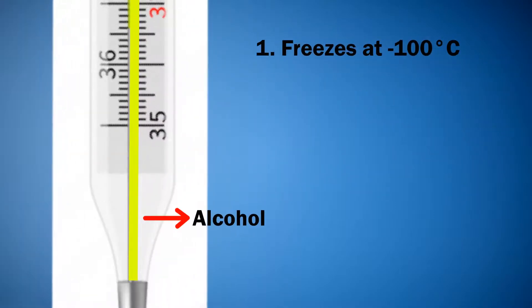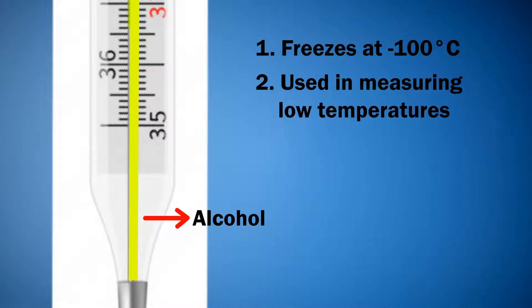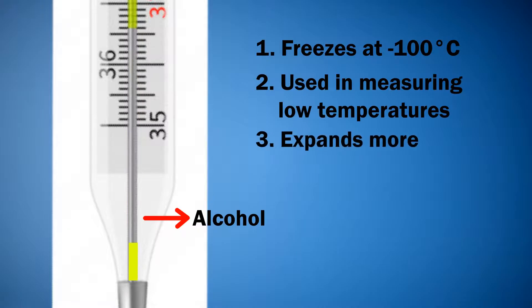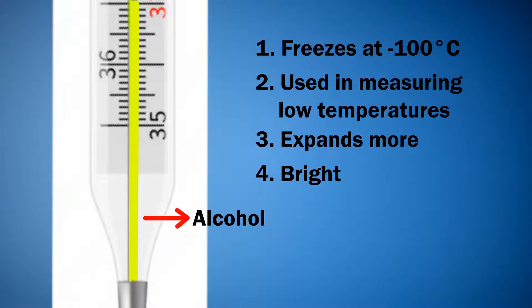Alcohol freezes at minus 100 degrees centigrade and thus can be used in measuring very low temperatures. It expands more compared to mercury but uniformly with a rise in temperature. It is bright in colour and hence easily visible.